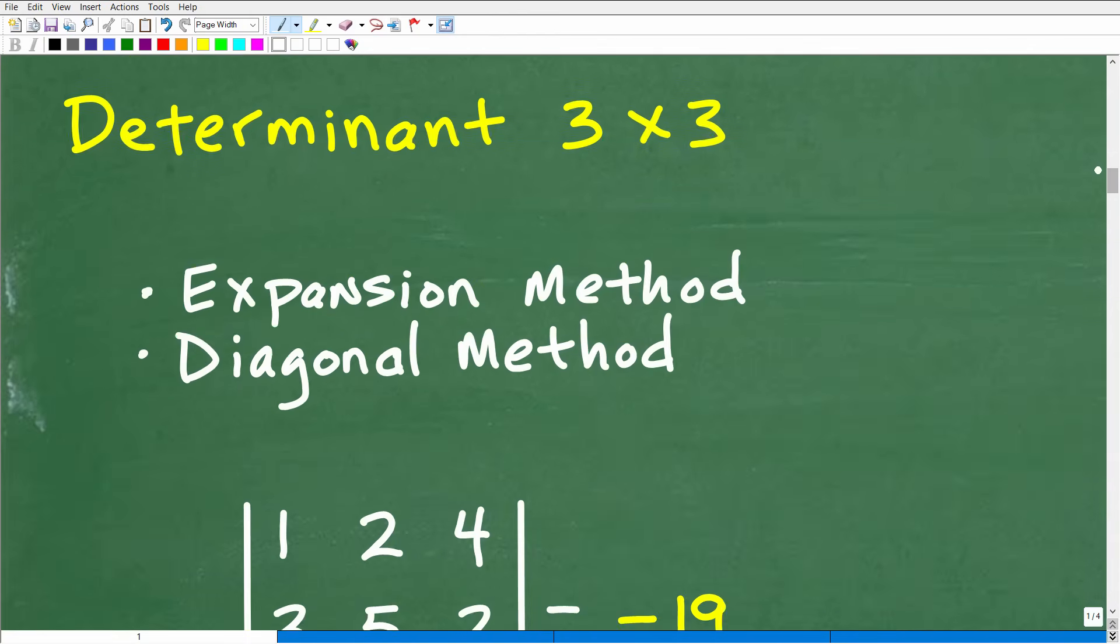When you're calculating the determinant of a three by three, you have some options. We have two methods here. You can use the expansion method, which is a pretty cool method. You need to know both methods - the expansion method or the diagonal method. Most students are probably much more familiar with the expansion method.